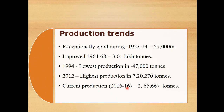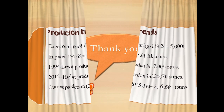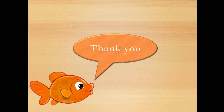Production trends: good production was recorded during 1923–24. Production improved in 1964–68, reaching 3.01 lakh tonnes. There was a somewhat low production period, then the highest production was recorded in 2012 at 7,20,270 tonnes. Production in 2015–16 was 2,65,667 tonnes. These are the overall production trends of oil sardine, covering all biological points.